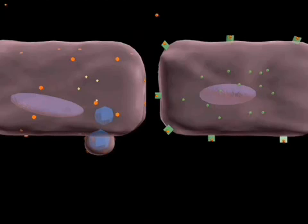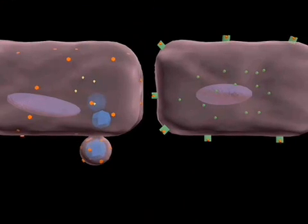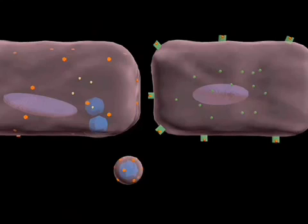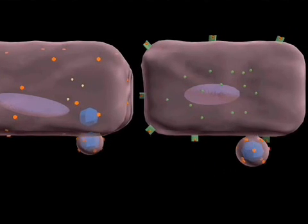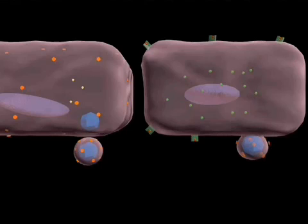They do this by binding to interferon receptors, which signal the synthesis of antiviral proteins. The antiviral proteins can switch the cell into a virus-resistant state if it should become infected.